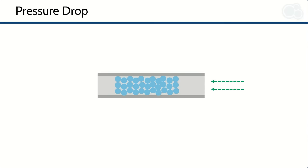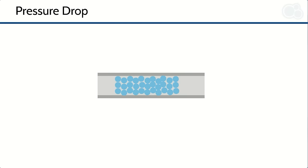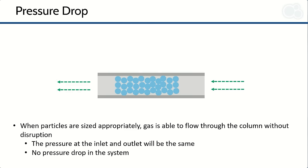First, let's talk about pressure drop. With a reasonable particle size, we can clearly see that there is a nice flow through the system, as there is a large interparticle void that allows for the gas flow. When particles are sized appropriately, gas is able to flow through the column without disruption. The pressure at the inlet and outlet remains the same — there is no pressure drop in the system.